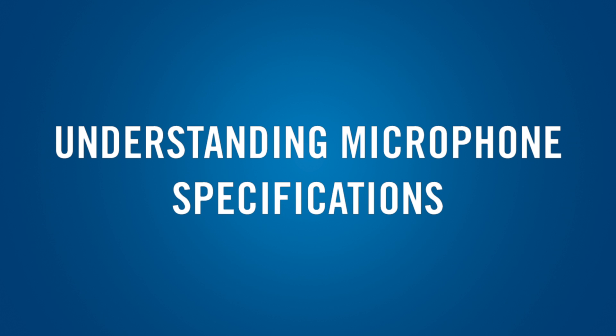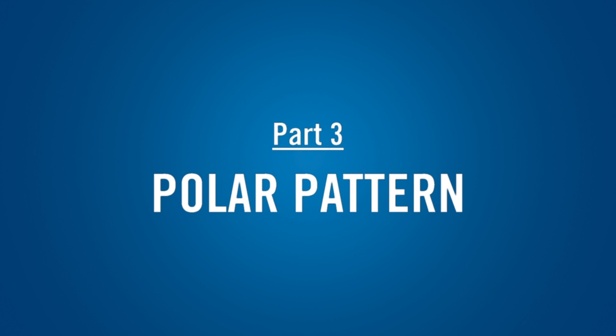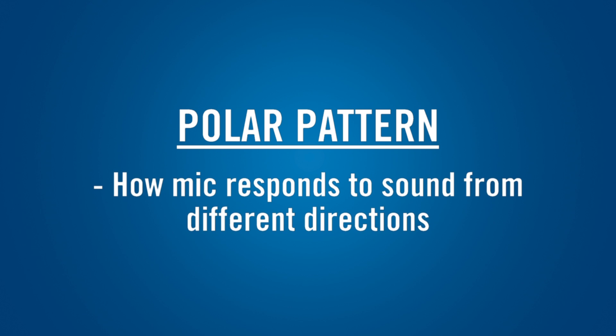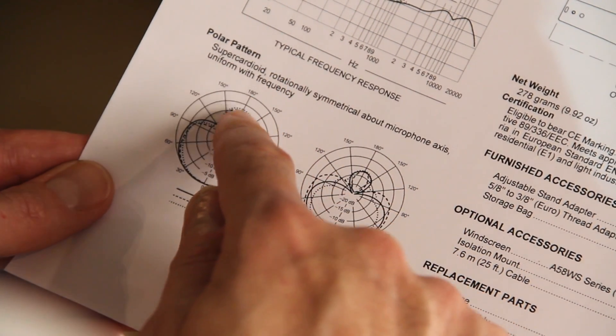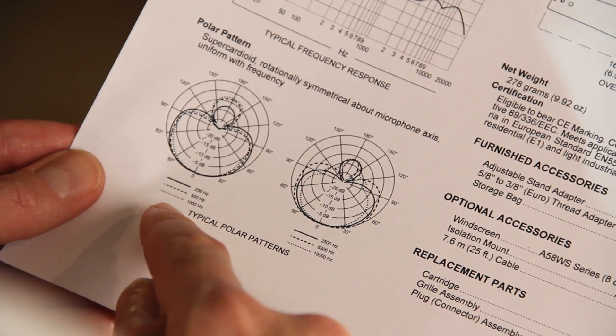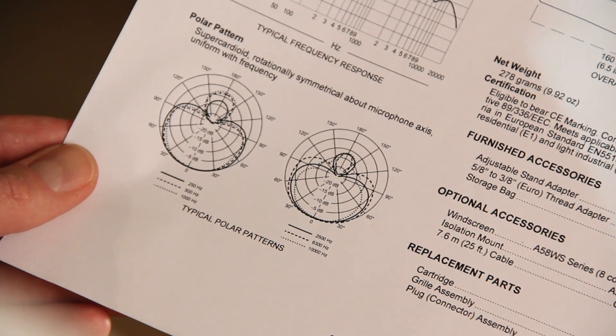In Part 1 of this series, we discussed the most common operating principles that microphones use to convert sound waves into an electrical signal. In Part 2, we learned how a microphone's frequency response affects the sound of voices and instruments. In this episode, we'll review an often misunderstood microphone specification: polar pattern. A microphone's polar pattern defines how it responds to sounds coming from different directions. The polar pattern tells you how the mic should be placed to maximize pickup of the desired sound source while minimizing feedback or pickup of background noise.